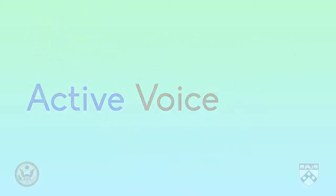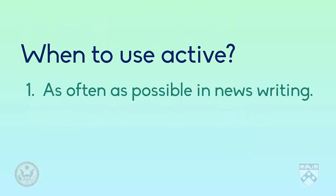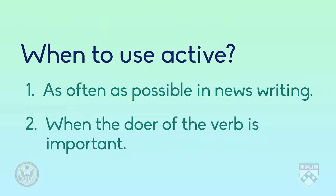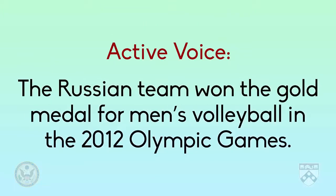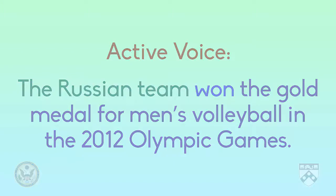Let's start with the active voice. Most of the time we use the active voice because it's simple and brief. Using active voice in many cases accomplishes this goal. Here's an example: The Russian team won the gold medal for men's volleyball in the 2012 Olympic Games. In this case, we want to know the doer, or who won, so we use the active voice.